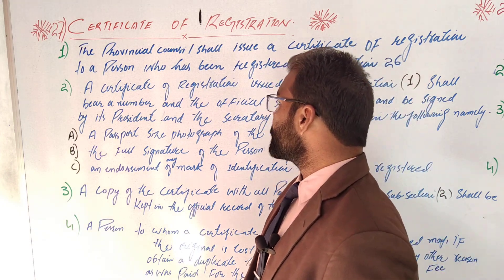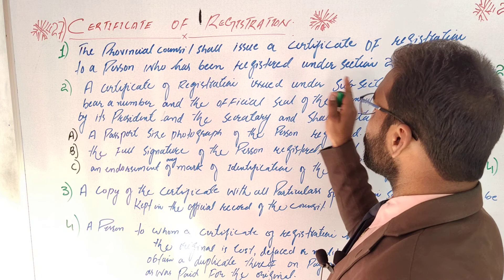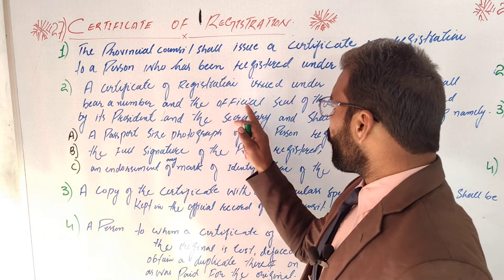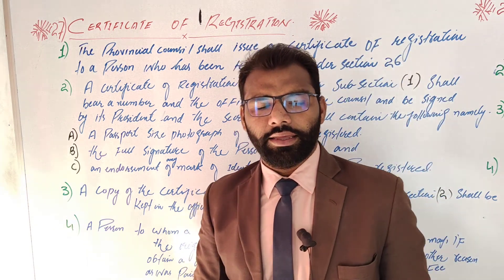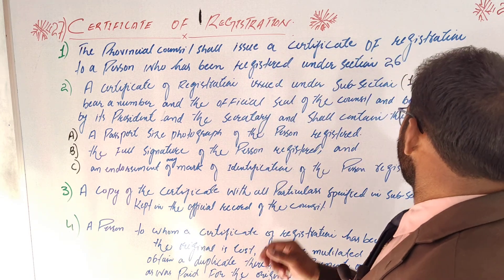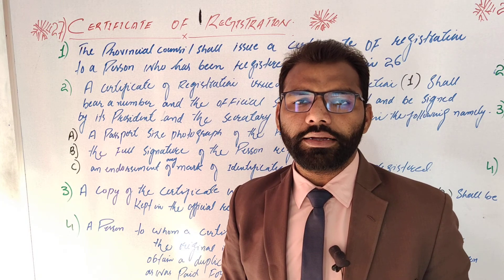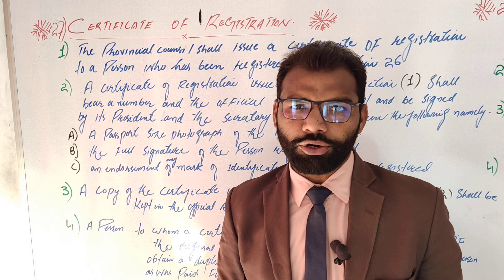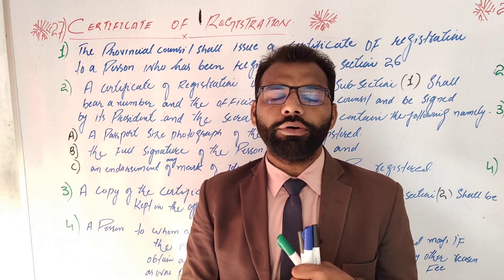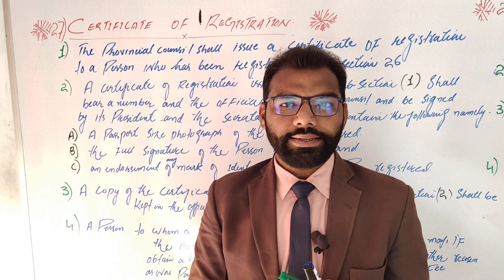Subsection 2: A Certificate of Registration issued under Subsection 1 shall have a number on it, the official seal of the council, and be signed by its president and its secretary. There are four things: one is the stamp, second is the number, third is the president's signature, and fourth is the secretary's signature.